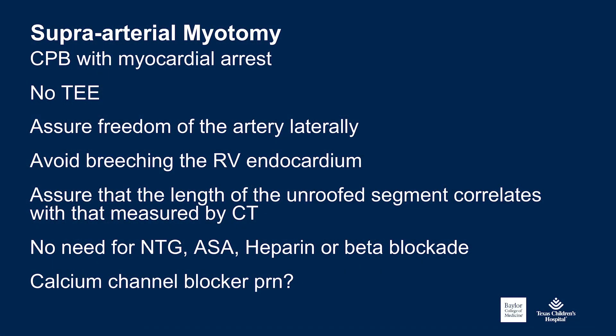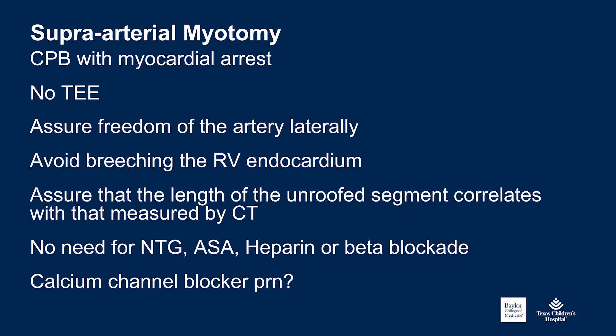Our preference has been for unroofing; personally I prefer to use bypass and myocardial arrest. I don't find TEE helpful for this operation. In addition to unroofing the coronary artery, you need to assure the artery is free laterally as well, and you want to avoid breaching the right ventricular endocardium — that is very difficult to manage. I try to assure that the length of the unroofed segment correlates with what we saw on the CT, since all of this anatomy is buried in fat surrounded by veins and arteries, and there's a tendency not to be aggressive enough.